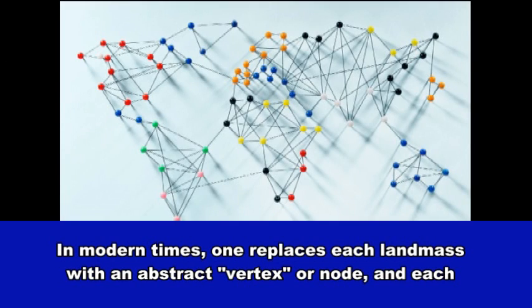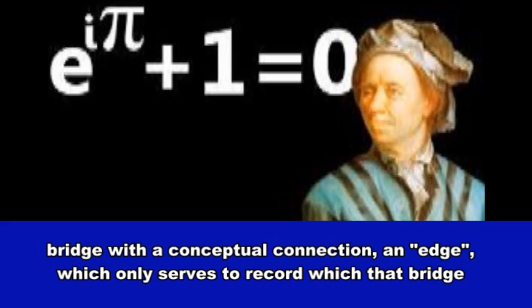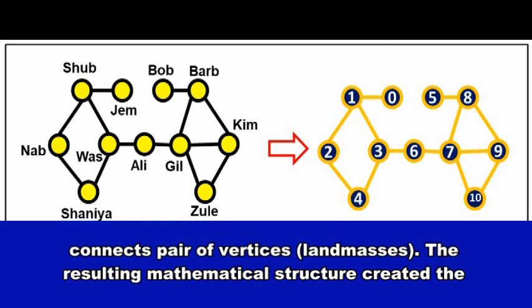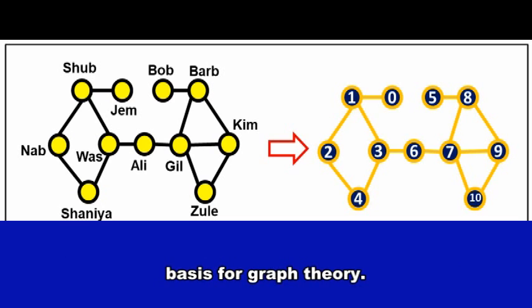In modern times, one replaces each landmass with an abstract vertex or node, and each bridge with a conceptual connection, an edge, which only serves to record which pair of vertices (landmasses) that bridge connects. The resulting mathematical structure created the basis for graph theory.